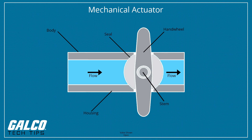A mechanical actuator functions by converting rotary motion into linear motion to execute movement. It involves gears, rails, pulleys, chains, and other devices to operate.